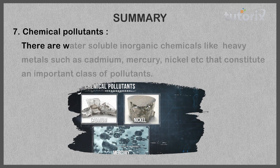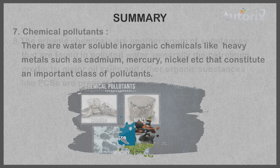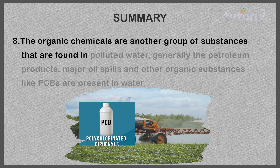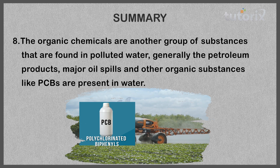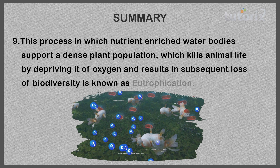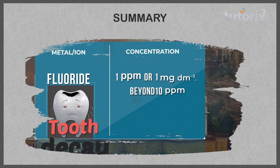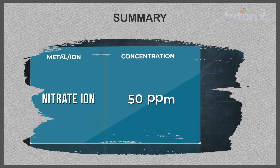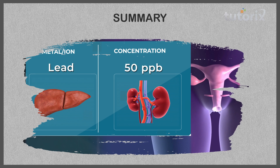Chemical pollutants: there are many water-soluble inorganic chemicals such as heavy metals like cadmium, mercury, and nickel which constitute an important class of pollutants. Organic chemicals are another group found in polluted water — generally petroleum products, major oil spills, and other organic substances like PCBs. The process in which nutrient-enriched water bodies support a dense plant population which kills animal life by depriving it of oxygen, resulting in subsequent loss of biodiversity, is known as eutrophication. The concentration of fluoride ion should be 1 ppm for drinking water. When it exceeds 10 ppm, it causes harmful effects to bones and teeth. The maximum limit for nitrate in drinking water is 50 ppm. The maximum limit prescribed for lead in drinking water is about 50 ppb; beyond that, it can damage the kidney, liver, and reproductive system.